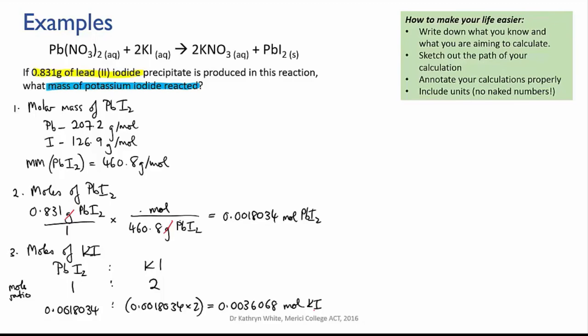Okay last step we have the moles of potassium iodide we just need to convert that to a mass. For that we need the molar mass of potassium iodide so again we consult the periodic table and we work out that the molar mass of KI is 166.0 grams per mole.